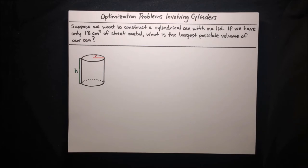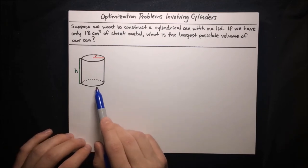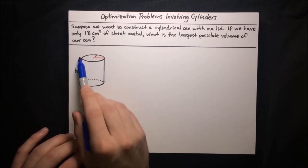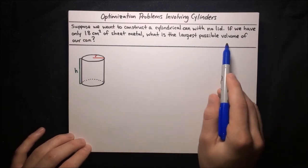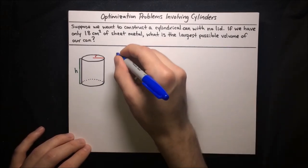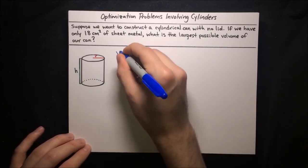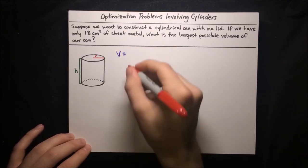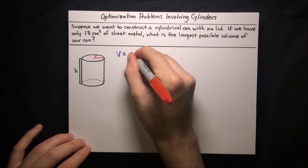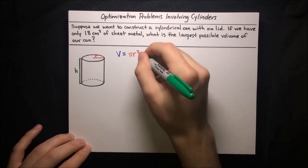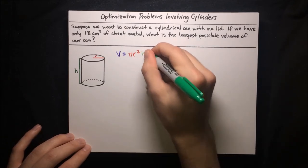We've got a diagram shown here. It's a cylinder with radius r and height h, and the thing that we want to optimize is the volume of the can. So we should write down the volume formula. Volume for a cylinder is equal to the area of the base, pi r squared, times the height h.